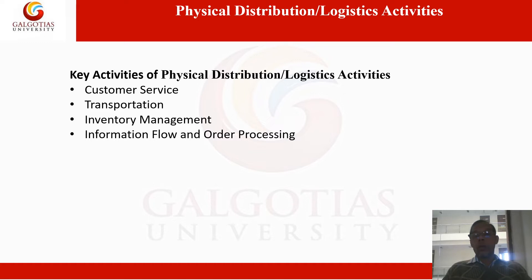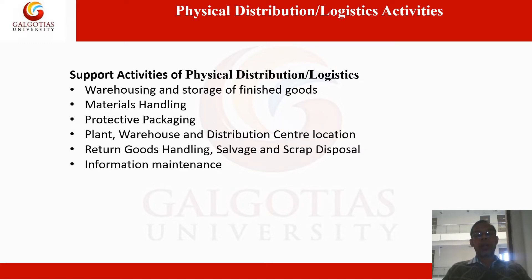The support activities of fiscal distribution logistics management are: warehousing and storage of finished goods, materials handling, protective packaging, the plant or warehouse or distribution center location, return goods handling, and if goods are unserviceable or damaged — salvage and scrap disposal — and information maintenance. These are the support activities in fiscal distribution.